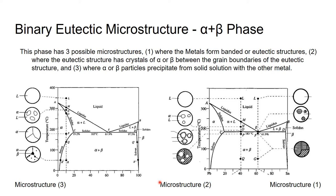The alpha plus beta phase has three possible microstructures within it. The first is where metals form banded or eutectic structures. The second, where the eutectic structure has crystals of alpha or beta in between the grain boundaries of the eutectic structure. And third, where alpha or beta particles precipitate from solid solution with the other metal. Each of these requires a very specific weight percent of tin, in our example, to form.